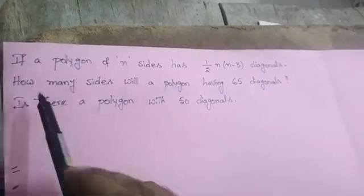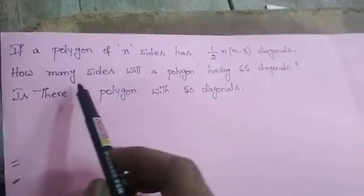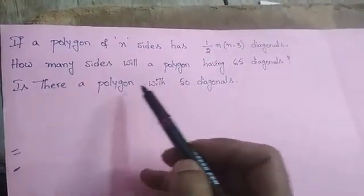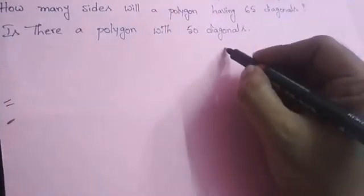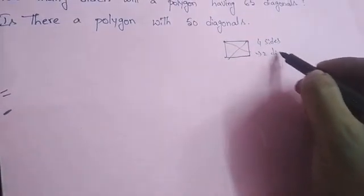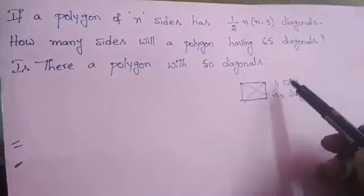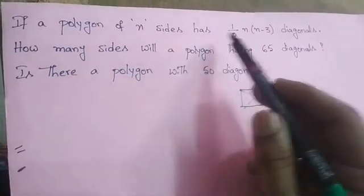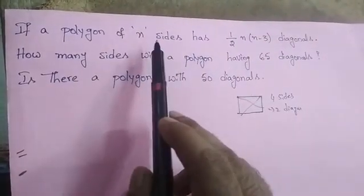Today's problem: if a polygon of n sides has (1/2) × n × (n-3) diagonals, then how many sides will a polygon with 65 diagonals have, and is there a polygon with 50 diagonals? Given that there is a polygon — a closed figure with multiple sides — for example a square has four sides and two diagonals. If there is a polygon of n sides, substituting gives the number of diagonals.